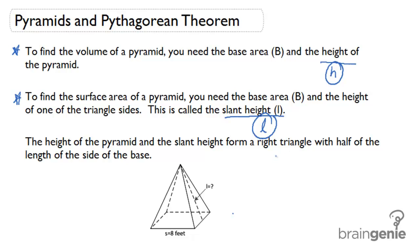If I'm given a problem where I'm given the slant height and I need to find the volume, I'm sort of stuck. And the same thing is if I'm given the regular height and I need to find the surface area, again I'm stuck. That's where Pythagorean Theorem comes into play.